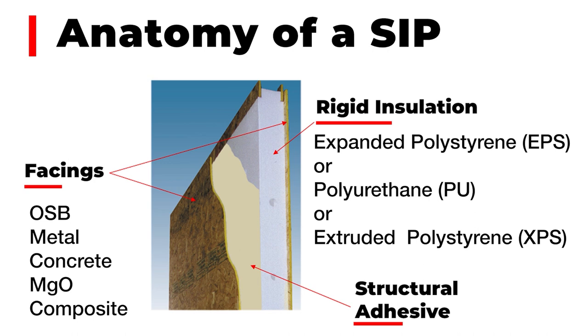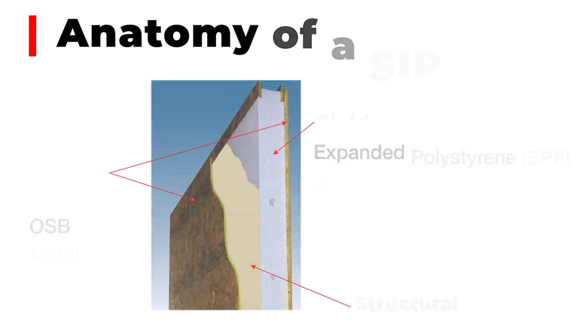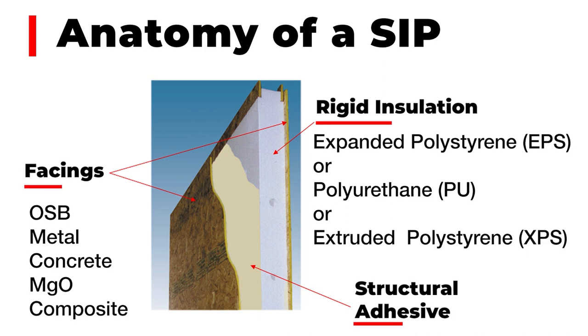We can make SIPs with different skins — metal, concrete, magnesium oxide, which is making good headway, as well as composites. Composites represent one new area where we can innovate in making structural insulated panels. The rigid foam core is predominantly expanded polystyrene, EPS, a closed-cell foam. Also used is XPS — extruded polystyrene, also known as styrofoam, available as red, blue, yellow, or green extruded boards.